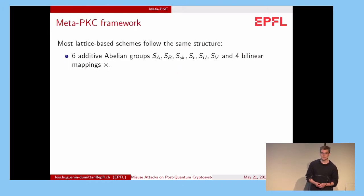We noticed that most lattice-based schemes share a similar structure. So we designed an abstraction of this structure that we call the Meta-PKC framework. We work with six additive abelian groups SA, SB, SSK, ST, SU, SV, and four bilinear mappings that we denote with this cross here between some of these groups. It can be polynomial multiplication or matrix multiplication, for instance.